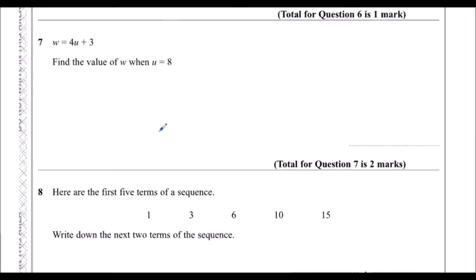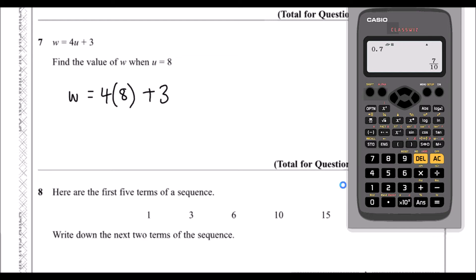Question 7: w equals 4u plus 3. Find the value of w when u is 8. We substitute u with 8; 4u means 4 times u, so we have 4 times 8 plus 3. The calculator works that out: 4 times 8 plus 3 is 35.